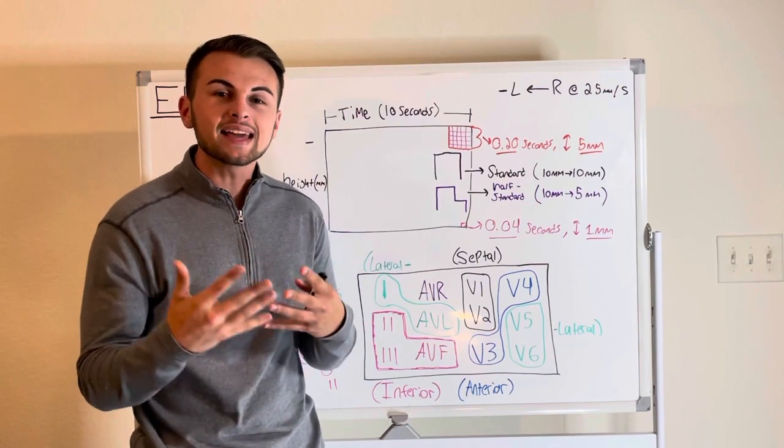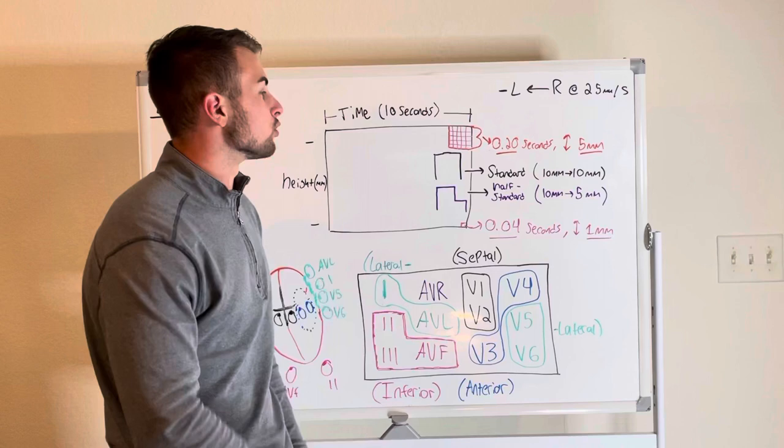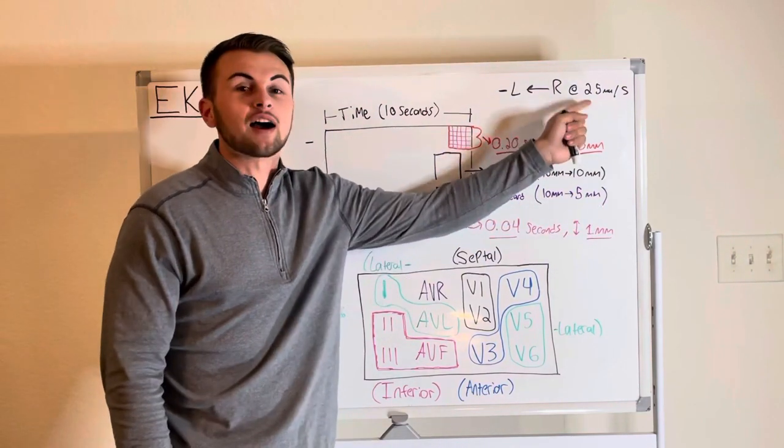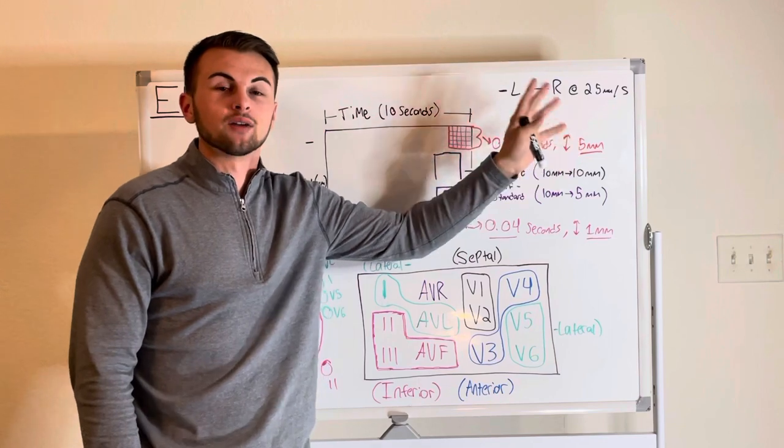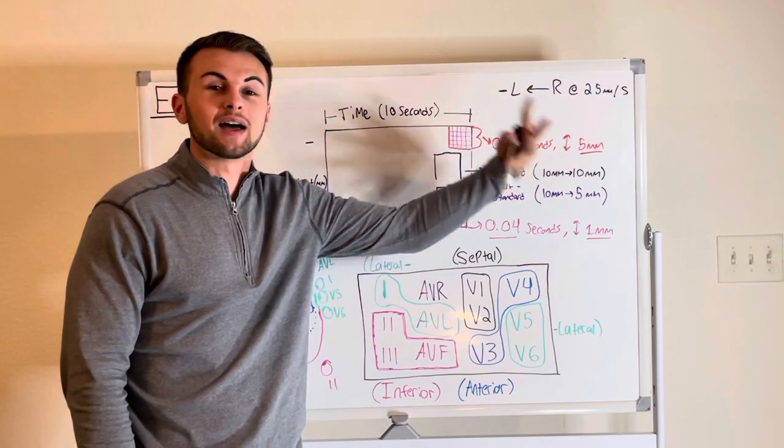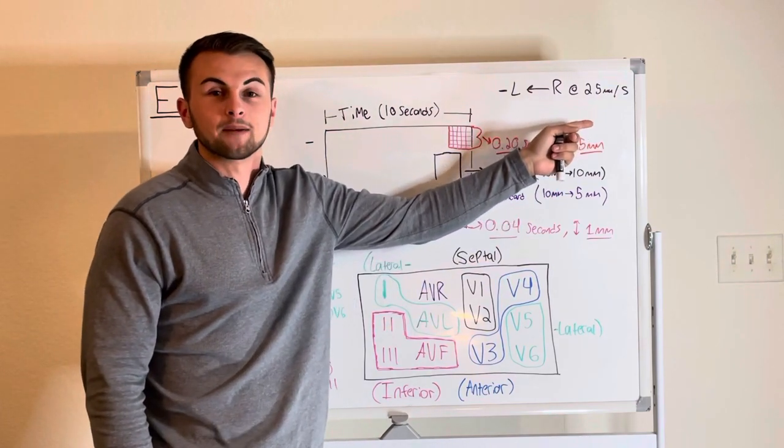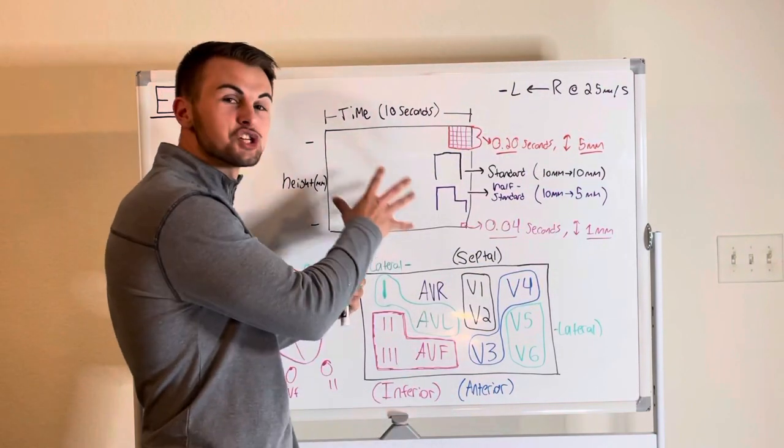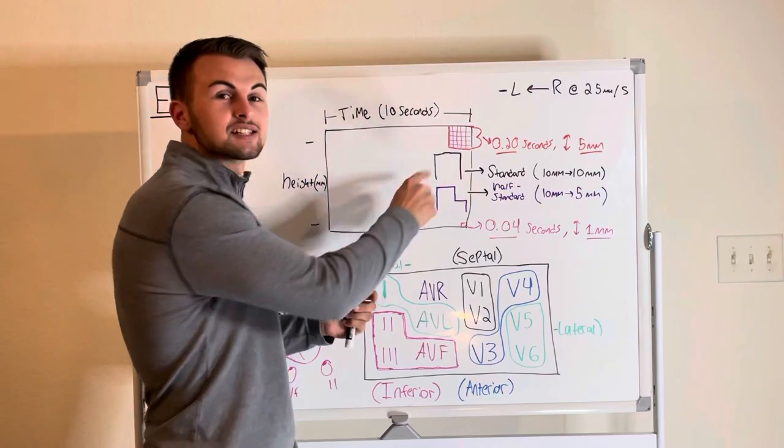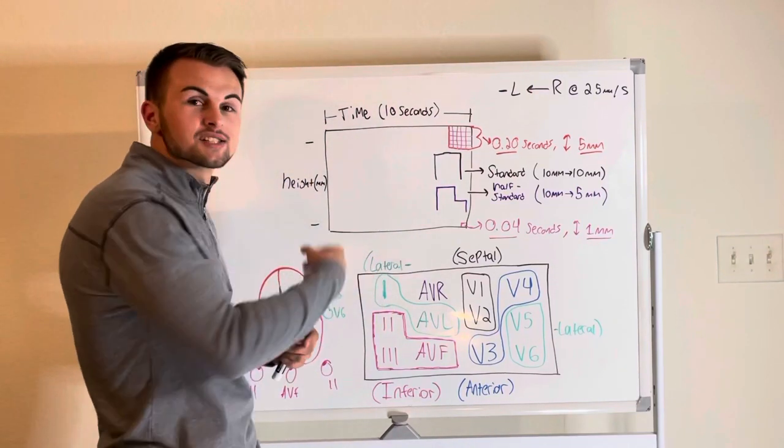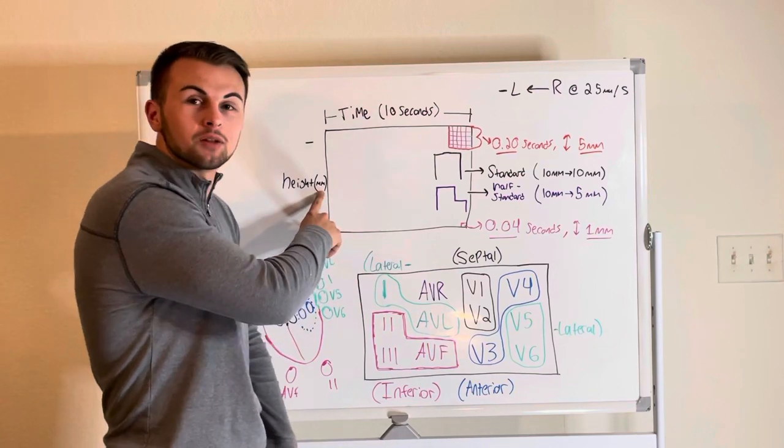First, the EKG machine paper travels from right to left at a rate of 25 millimeters per second. This is important because if somebody were to mess with the configurations you need to remember to set it back to 25 millimeters per second. Also on our EKG sheet the x-axis represents time in seconds while the y-axis represents height in millimeters.